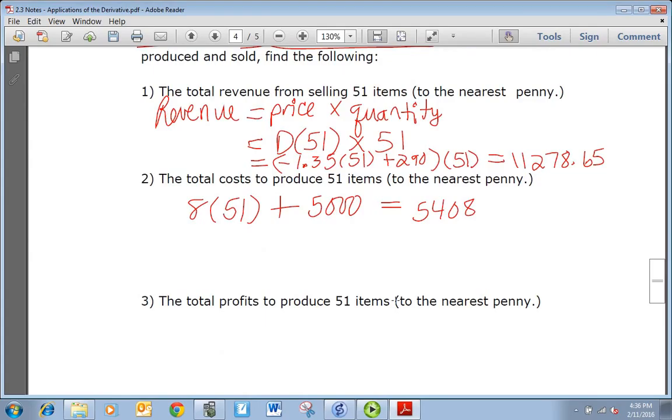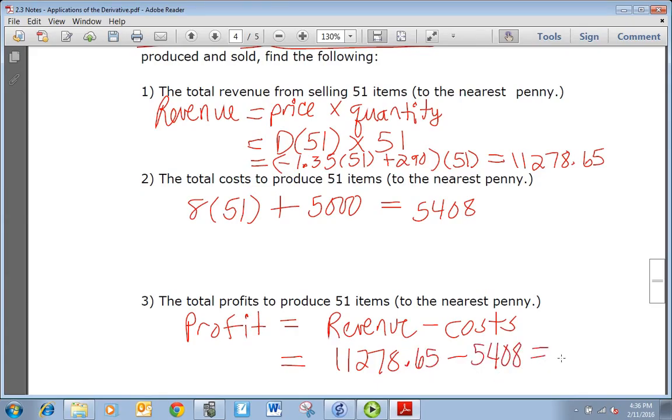And last we want profits. So profit is equal to revenue minus cost. Well, we found revenue in one, that was 11,278.65. We found the cost in the second one, 5,408. If you subtract those, you should get 5,870.65.